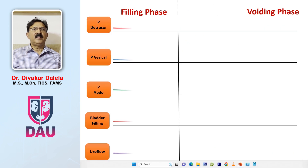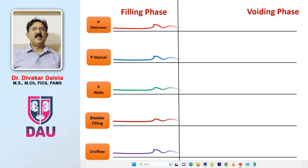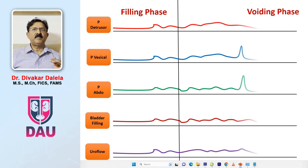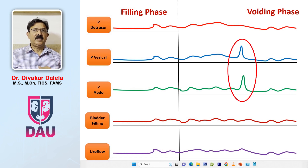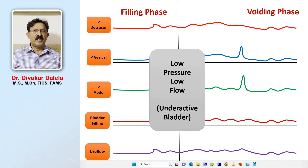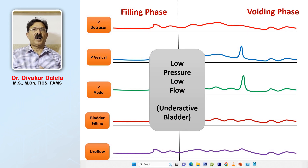In a third example, you see the pressure lines in the filling phase, and as you give the command for voiding, you notice that detrusor pressure and P-vesicle pressure are not rising, and the same thing is happening with uroflow — uroflow is also low. To ensure that the lines are patent, you do a cuff check, and with the cuff there is some change in the pressure lines. So this is a situation of low pressure and low flow, which is typical of underactive bladder.